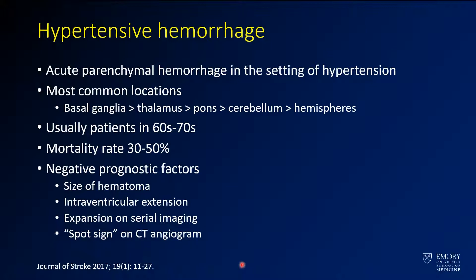The most common locations we've talked about are the basal ganglia, the thalamus, pons, and the cerebellum. The cerebral hemispheres are relatively less common, but it's such a common finding overall that you'll see them in the cerebral hemispheres relatively commonly as well.